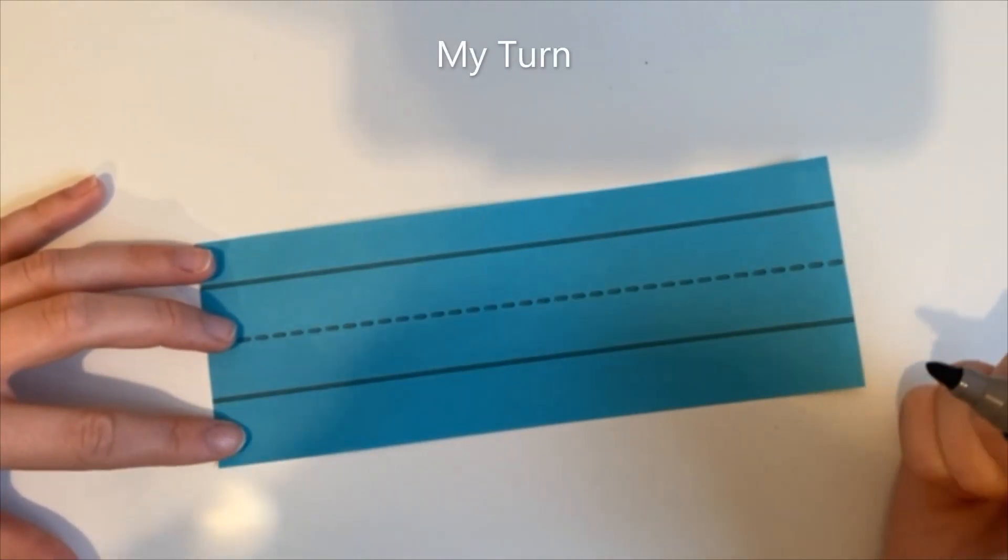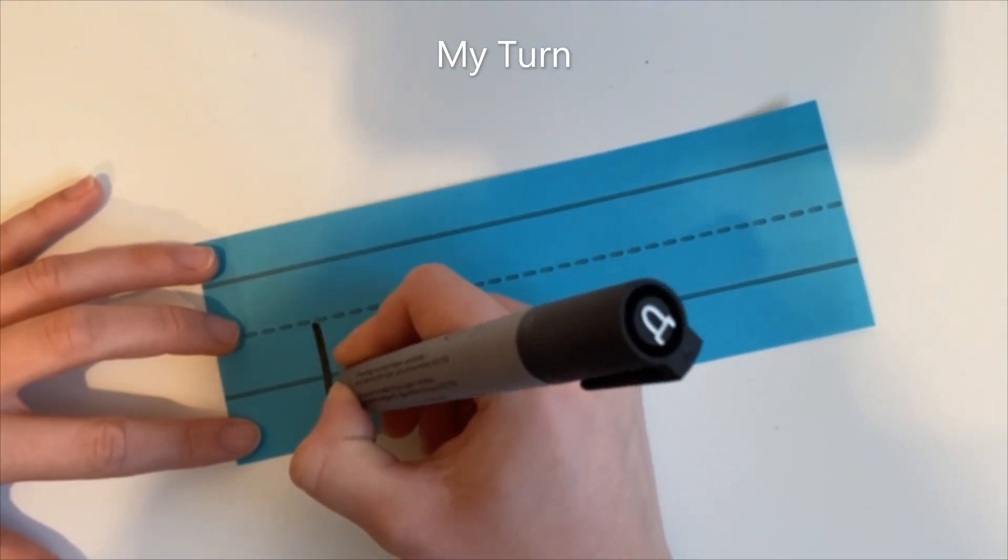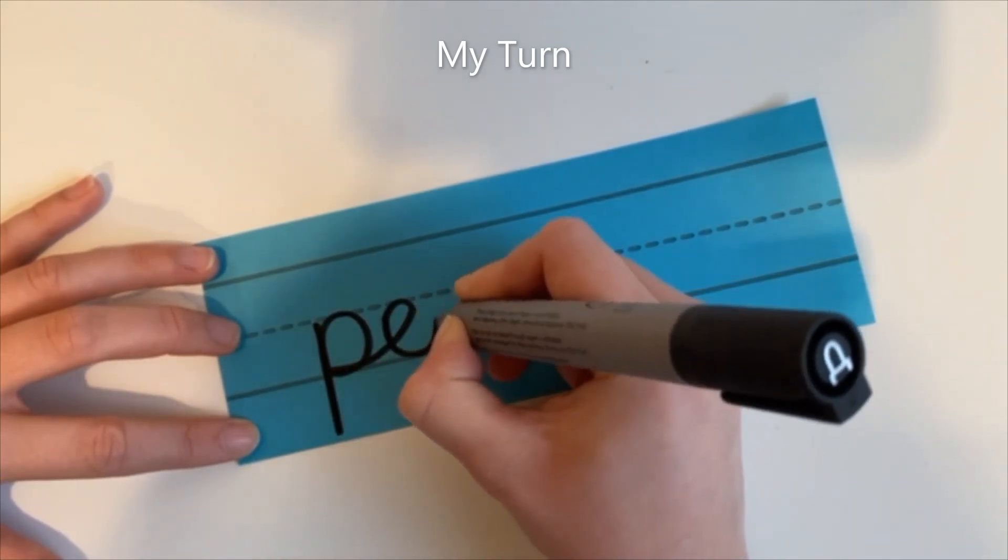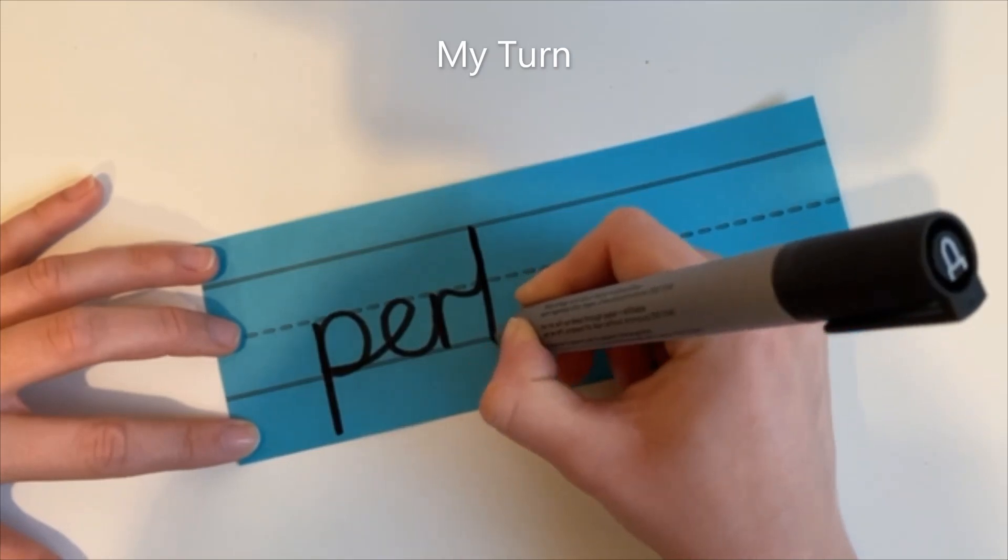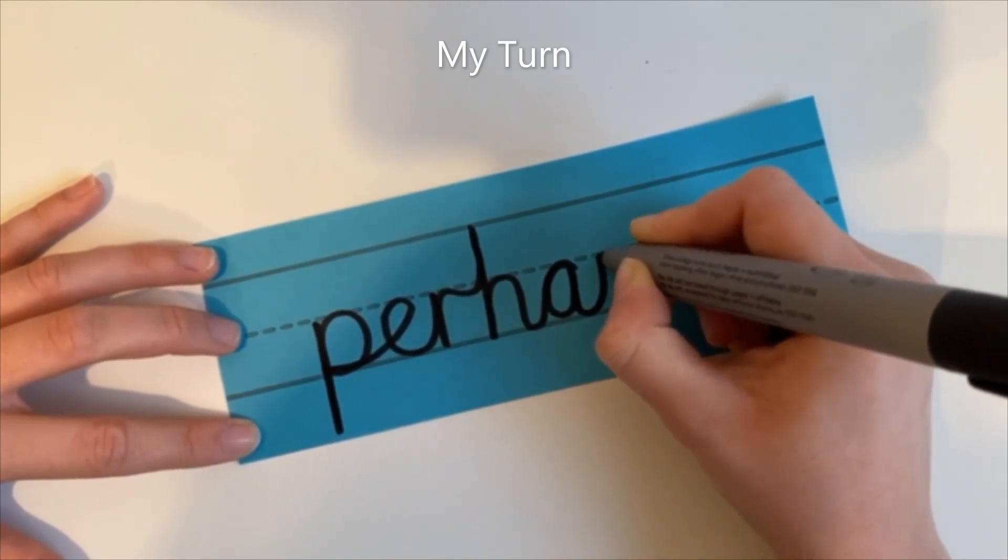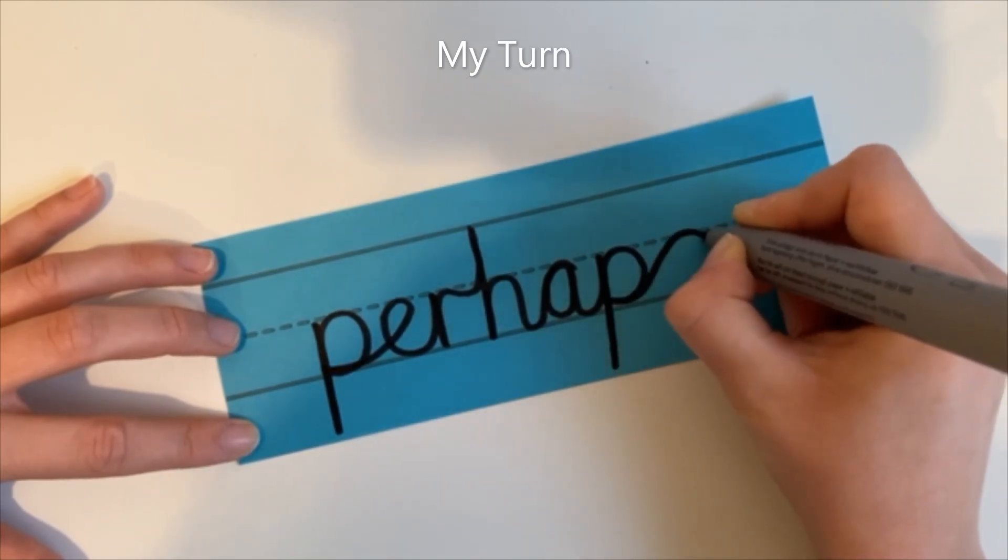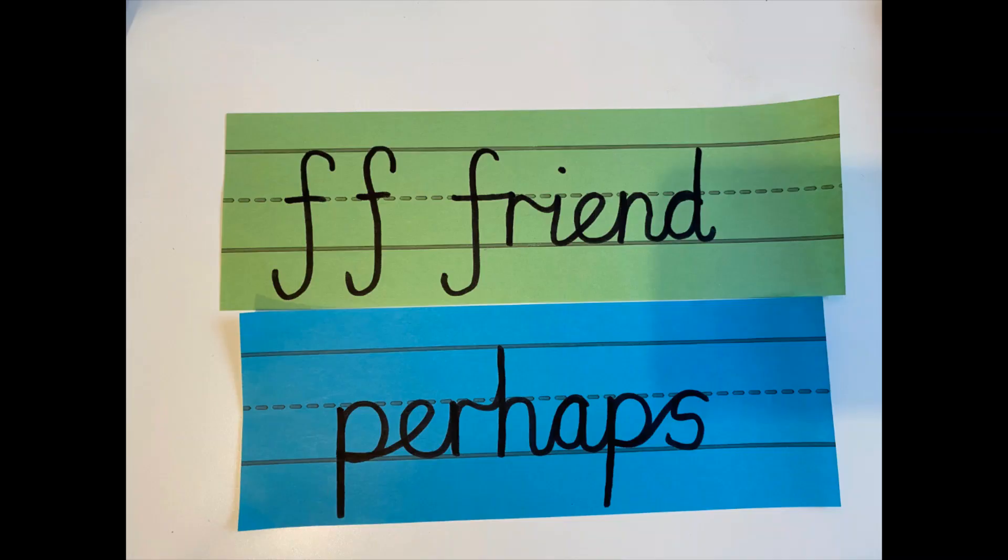Now on to the year three four word for today, which is perhaps. Okay, I'm going to start with my P. Going down again, it's a descender. P, then over to my E. R, can you remember what letter comes next? Well done, it's H and that's an ascending letter. Then over to my A. My pen still hasn't come away. Back down for a descending letter with my P. And finally over to my S. Perhaps. Start by practising the letter F. Then you can try friend and perhaps.